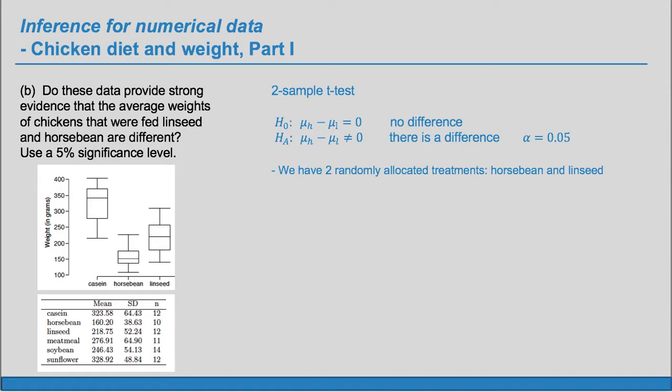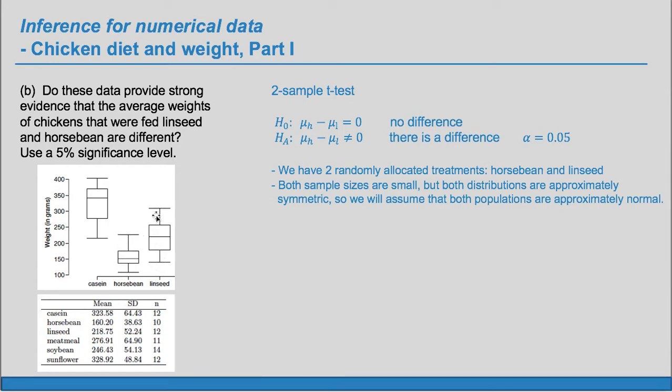Now the second condition is harder to verify. We look to see if it is reasonable. Since both sample sizes are small, we are looking to see if it is reasonable that the populations are approximately normal. So, since we can't see the populations, we can only see the samples. We observe that the samples are symmetric. We can't say the samples are normal. That's too strong a statement. We can't see that from the box plot. But we can say that the samples are symmetric.